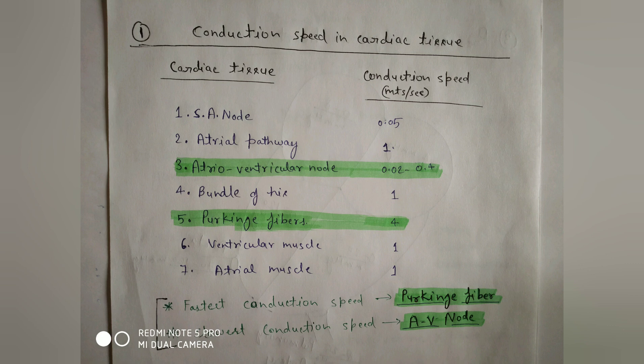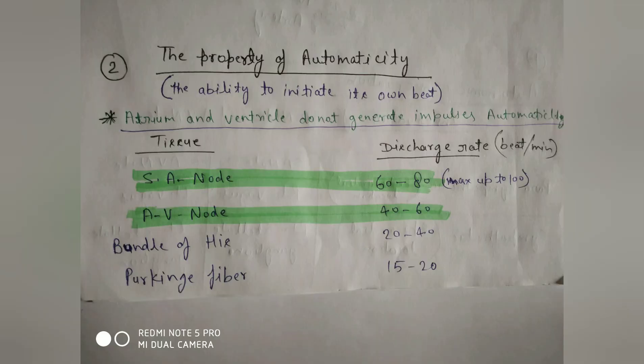The slowest conduction speed is in the atrioventricular node, at 0.02 to 0.4 meters per second. Next is the property of automaticity, meaning the ability to initiate its own beat. Importantly, the atria and ventricles cannot generate automaticity on their own.